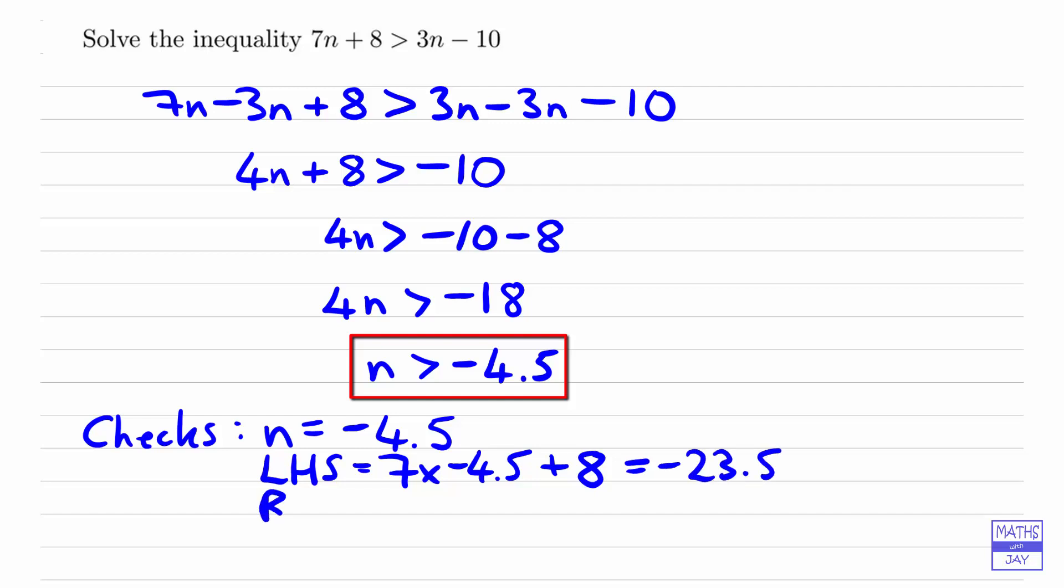And the right-hand side, well, that's going to be 3 times negative 4.5 subtract 10. So that's minus 13.5, take away 10, so that's also minus 23.5. So that's a good start. So we know that negative 4.5 is the right value there.